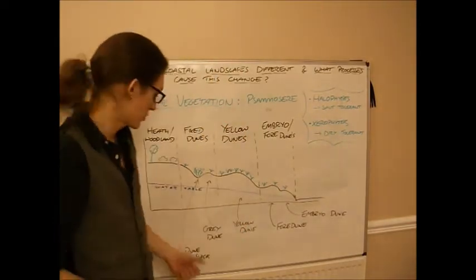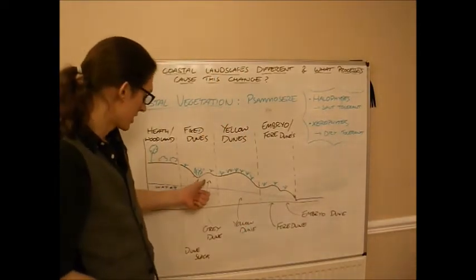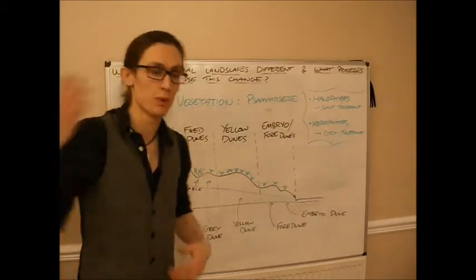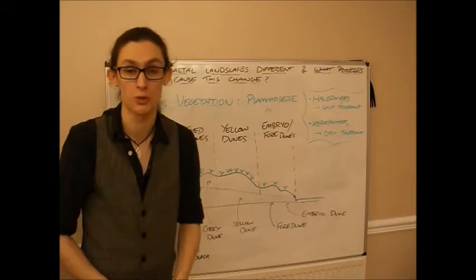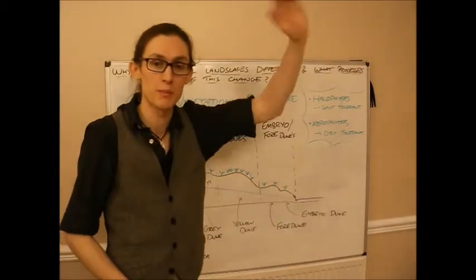If there's a lot of wind as well, we get what's called a dune slack. This is where the wind blows away parts of the dunes, particularly towards the back of the fixed dunes and the yellow dunes. It creates these dips.